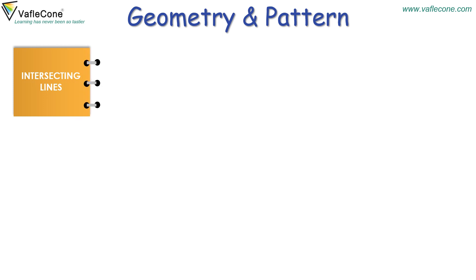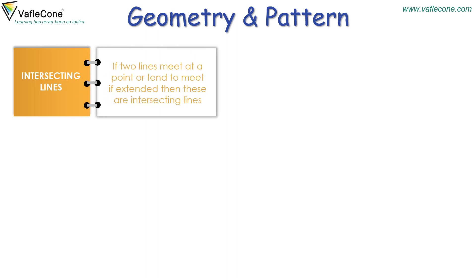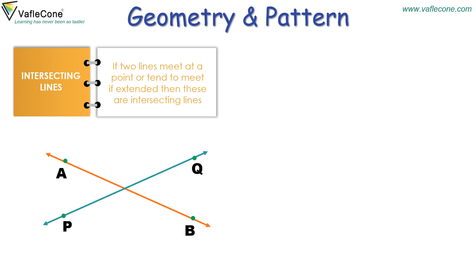Intersecting lines: if two lines meet at a point, or tend to meet if extended, then these are intersecting lines. A, B and P, Q are two lines that intersect at a point O.